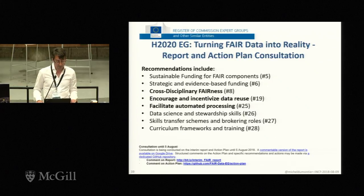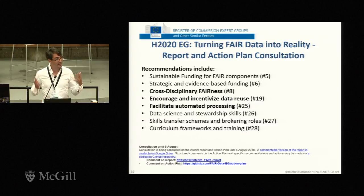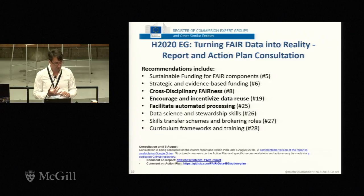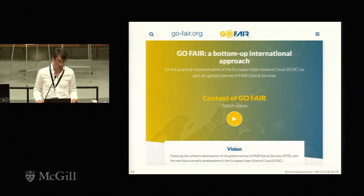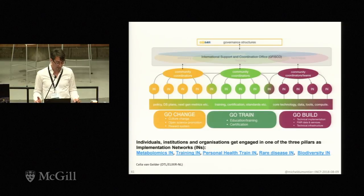An expert group of the European Commission was tasked to write a report on turning FAIR data into reality. They have a number of different recommendations including cross-disciplinary FAIRness, encouraging and incentivizing data reuse, and facilitating automated processing. FAIR tells you what you should achieve, but how do we get there? That also includes data science and stewardship skills, additional training, and curriculum development, which we are starting to do through the Global Open FAIR Initiative, or Go FAIR.